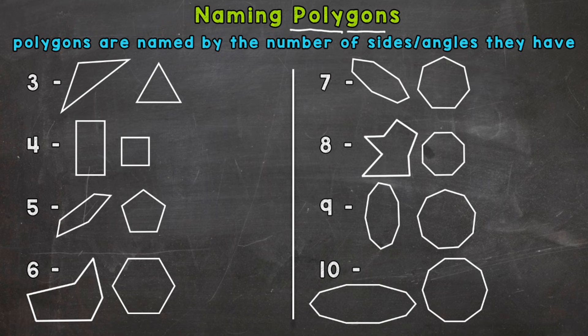Like I mentioned, we're going to work our way through three sides and angles up to ten sides and angles. The numbers to the left show how many angles and sides that polygon has.